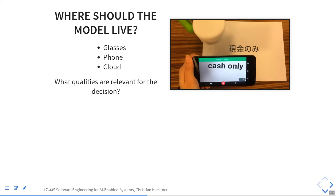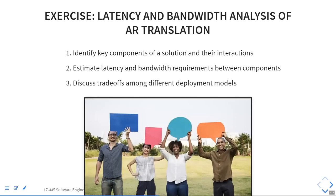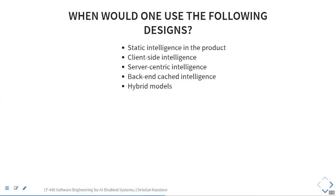In summary, when making these kinds of architectural decisions, you think about: how much data does the model produce, how energy-consuming is it especially when running continuously, what's the latency, how big is the model, what's the cost of operating the model, how does telemetry work, and what happens when users are offline. In the book, five deployment designs are distinguished: static intelligence in the product, client-side intelligence, server-centric, cached intelligence, and various hybrid approaches.